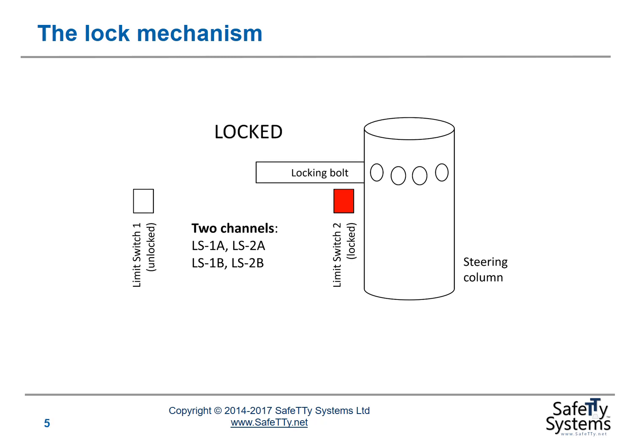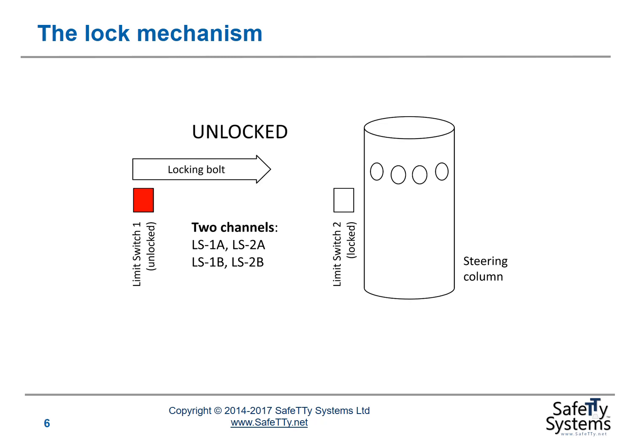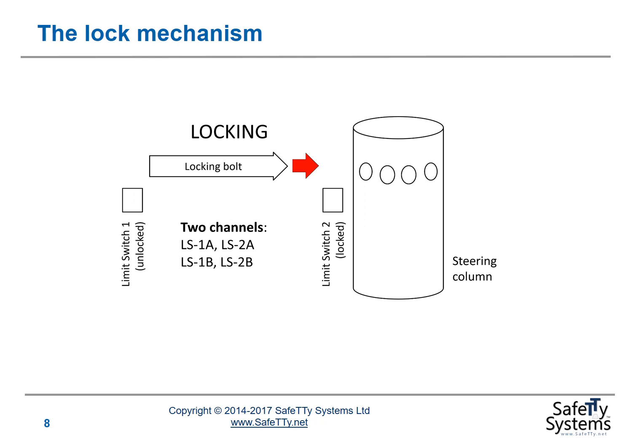When the lock system is locked, limit switch 2A is in place. There are two independent channels assumed on each limit switch. So limit switch 2A and 2B are two independent switches that are both set when the lock is in place. Limit switch 1A and 1B are both set when the system is fully unlocked. There is a situation during unlocking, and similarly during locking, when neither switch is set.